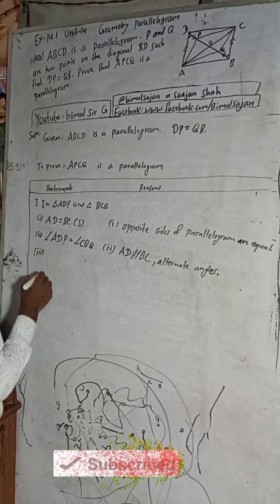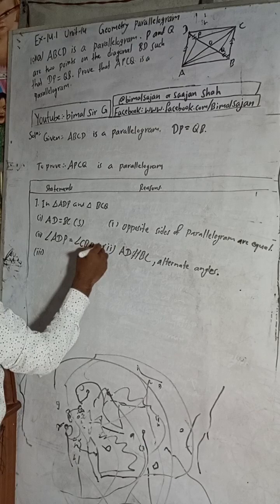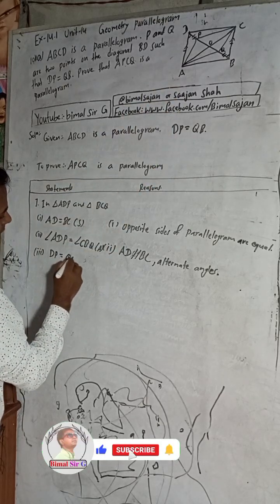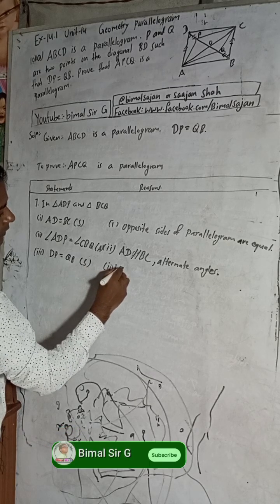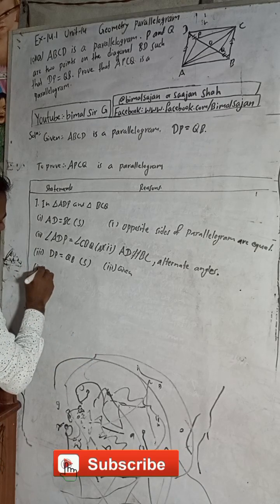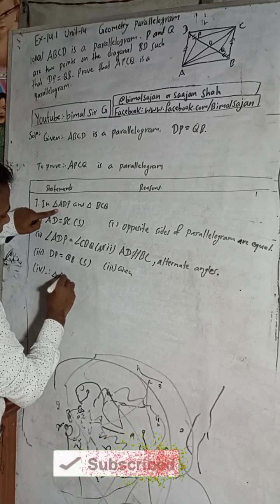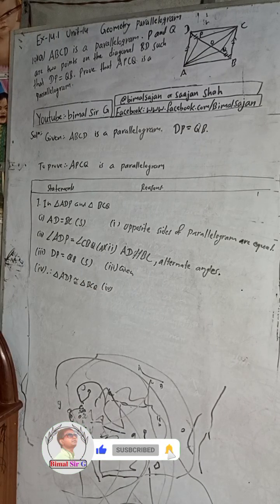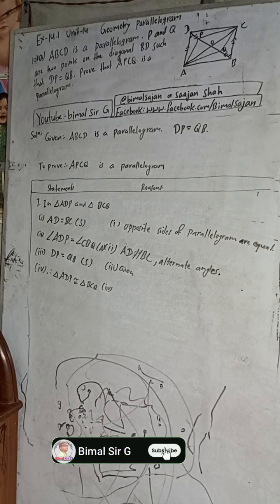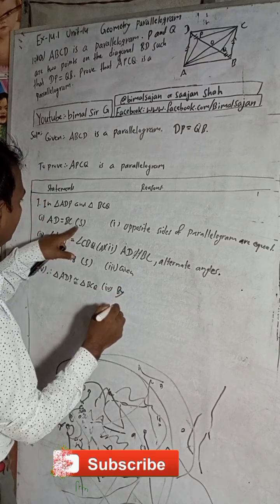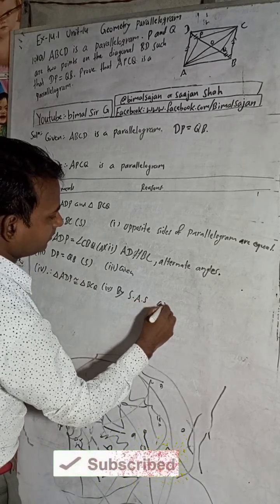Now we have taken side, angle, side. DP is equal to QB — this is given. So the side DP equal to QB is our third part. Therefore, triangle ADP is congruent to triangle BCQ by Side-Angle-Side (SAS) criteria.